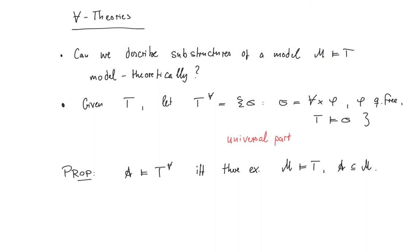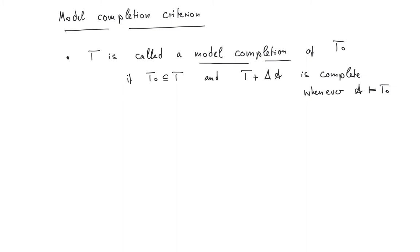The desired characterization is the following: A is a model of the universal part of T if and only if it is a substructure of a model of T. This is going to be quite nice because it means that in order to look at substructures, we can look at what is the universal part of T.